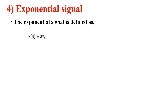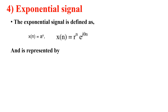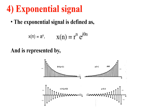The last elementary signal is the exponential signal. It is defined as x(n) = a^n, where a = r·e^(jθ), giving x(n) = r^n · e^(jθn). This can be represented graphically — there is a growing exponential and a decaying exponential, both of which are examples of exponential signals.